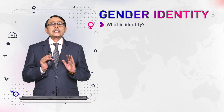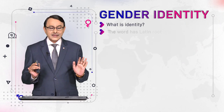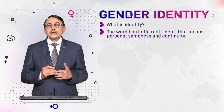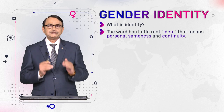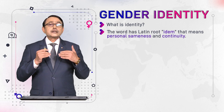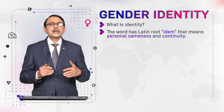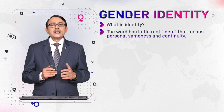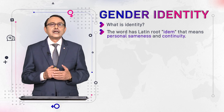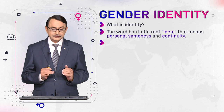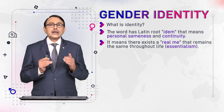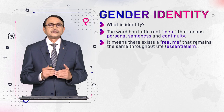What is identity? The word identity has a Latin root — it comes from 'item,' which means personal sameness and continuity. A person remains the same throughout life; that sameness continues over our lifespan.